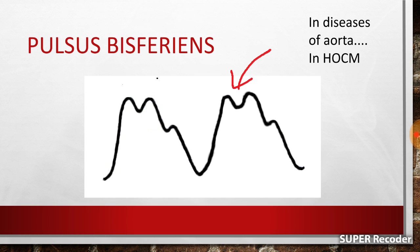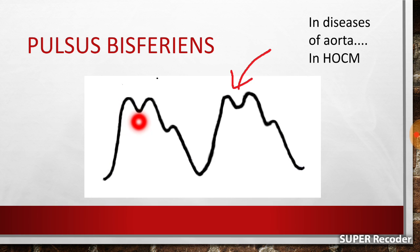Pulsus bisferens is seen in diseases of the aorta like severe aortic regurgitation. In severe aortic regurgitation, initially there is a rapid upstroke, but when a large volume of blood is passing at high speed in the aorta, as Bernoulli's principle states — when a fluid flows at a high rate in a tube — there is negative pressure created on the lateral walls which sucks the arterial wall inward. This causes a slight fall in pressure inside the artery, giving rise to this notch.